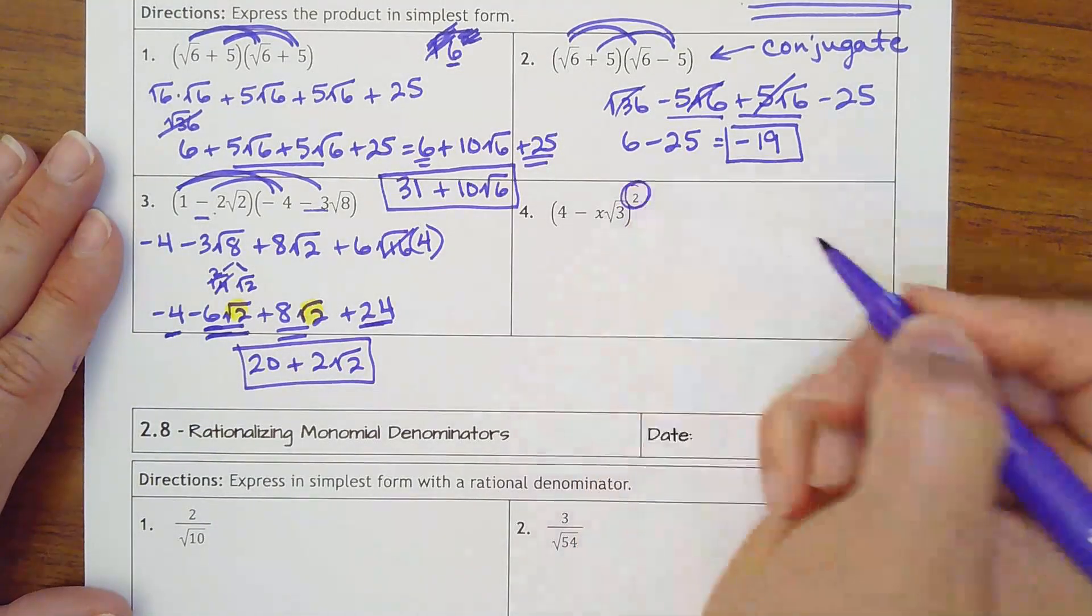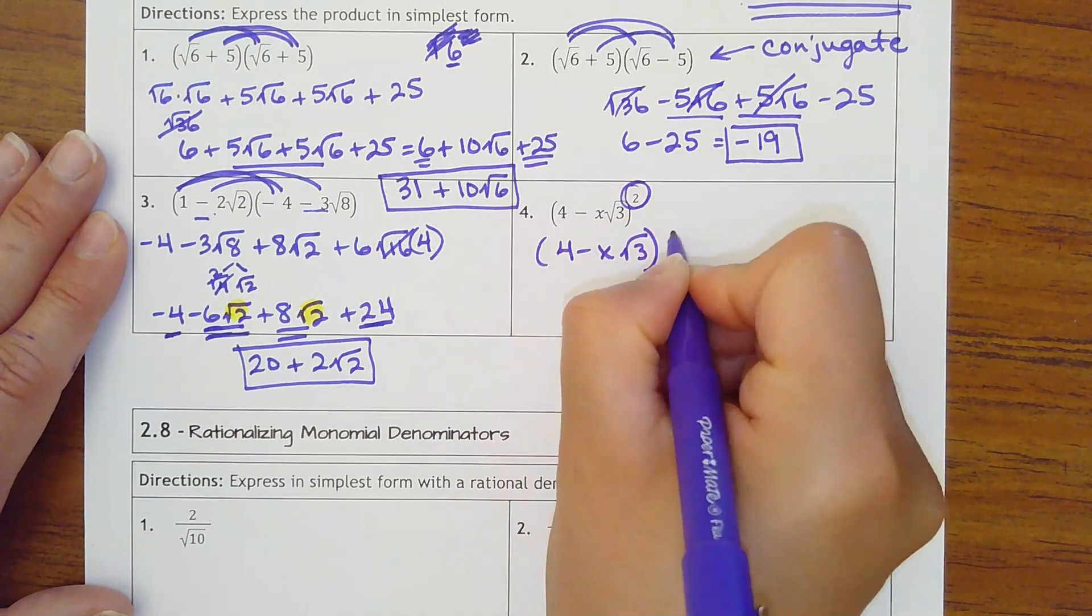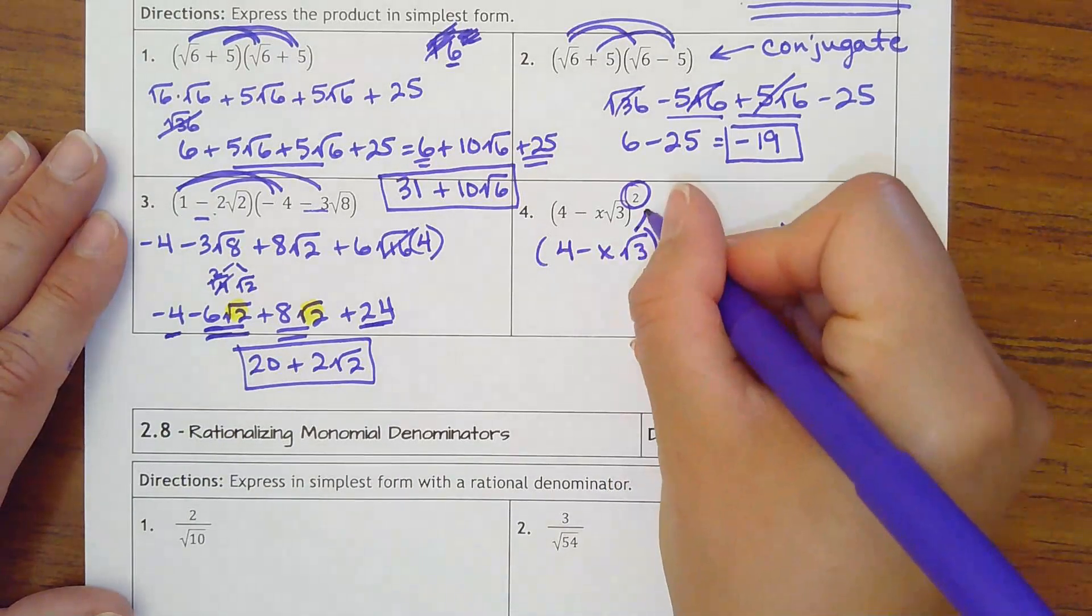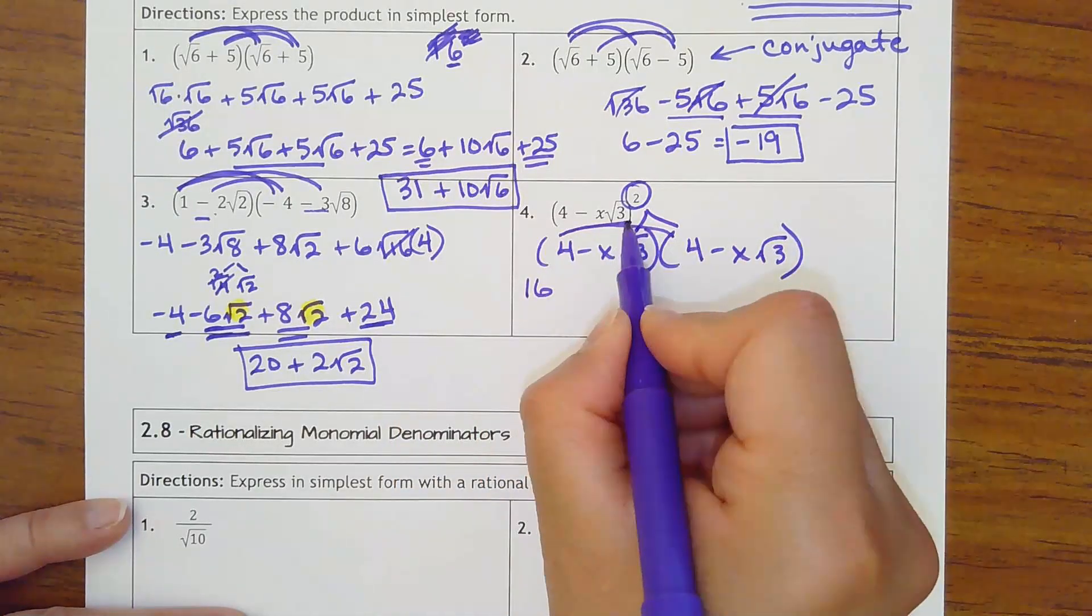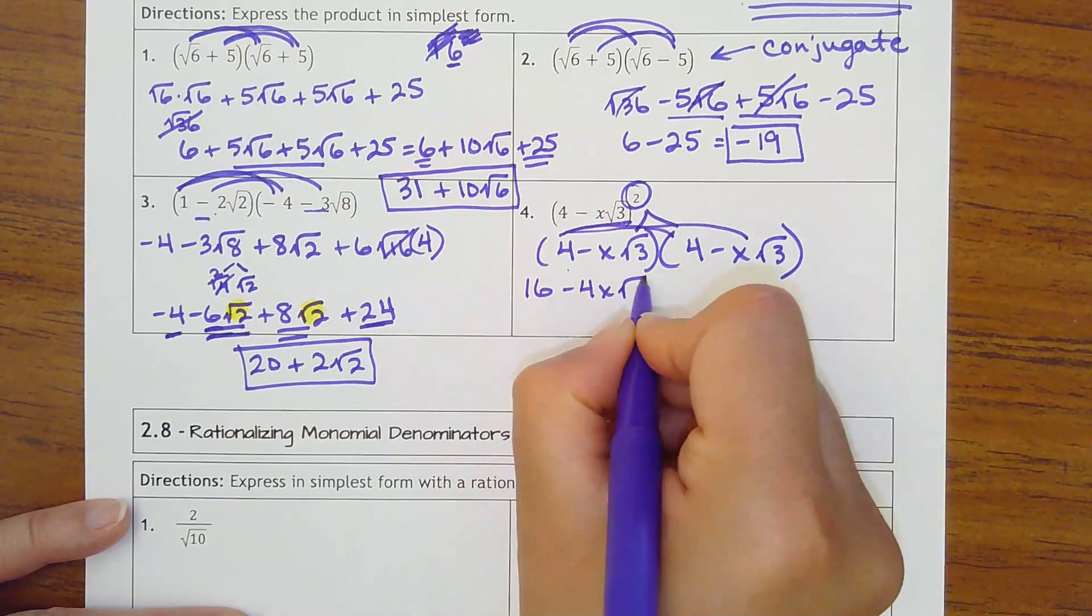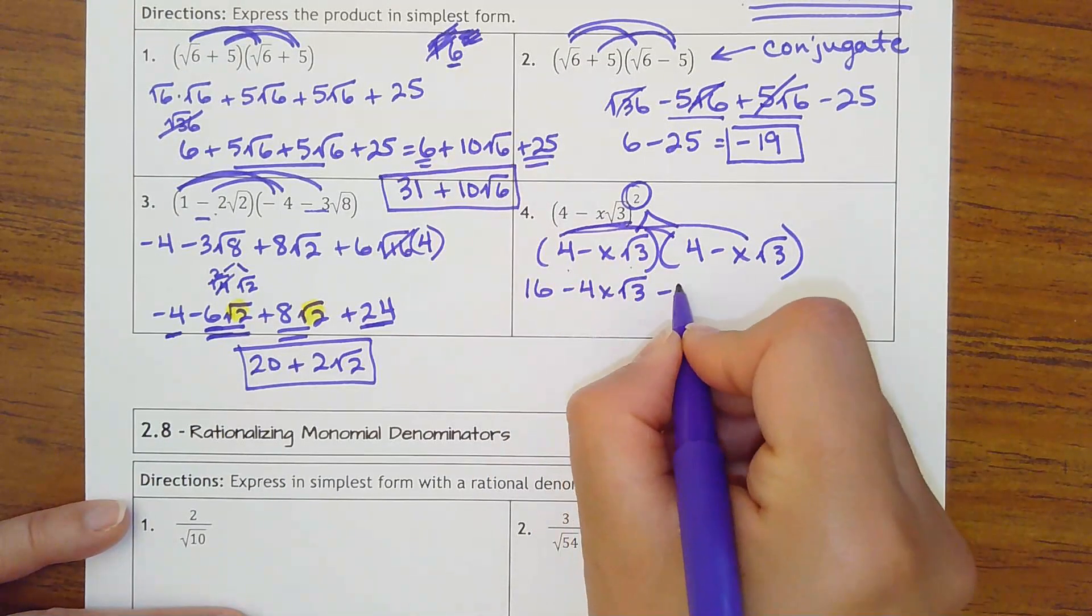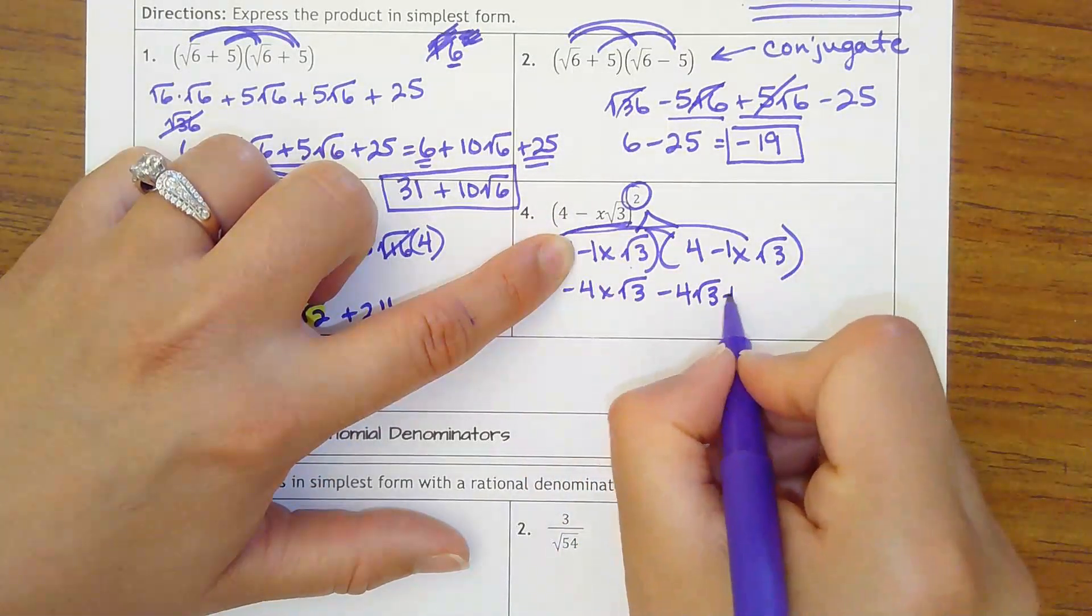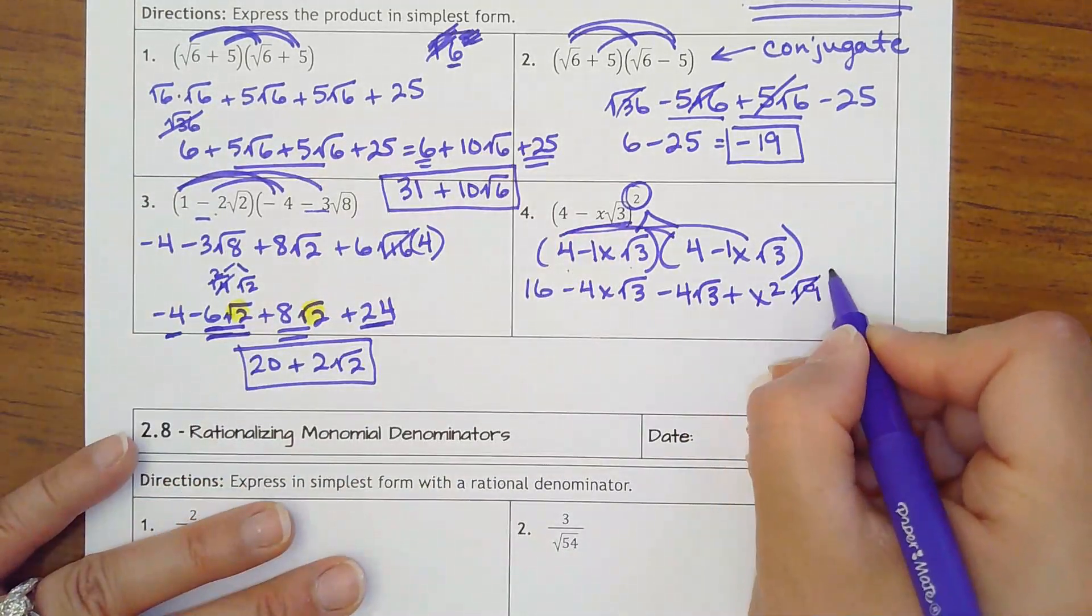All right. Number 4. Anytime you see this exponent on the outside, what I want you to do is actually write this twice. So it's saying this whole thing is times itself again. Like that. Okay. So it splits it into 2. Now we're just going to FOIL. First times first. 16. First times. Or outer. Sorry. First outer. 4 times negative x is negative 4x square roots of 3. Inners. It should be the exact same thing because I wrote this same thing twice. It should be a negative 4x square root of 3. And then last. Negative x times negative x. Think negative 1 times negative 1 is positive 1x squared. Square root of 3 times square root of 3 should be square root of 9, which is actually back to actually back to a 3.